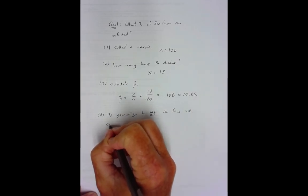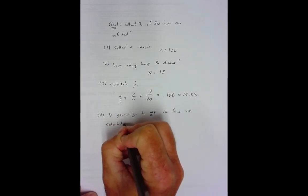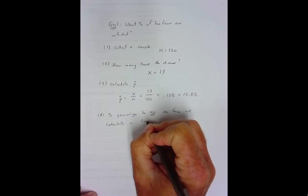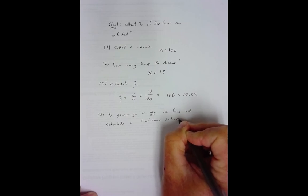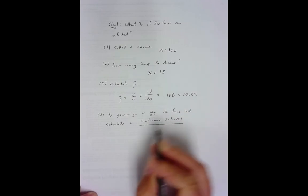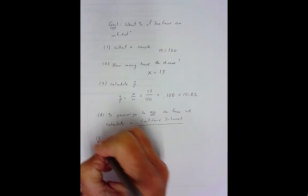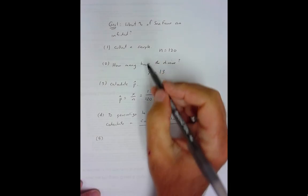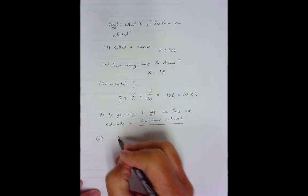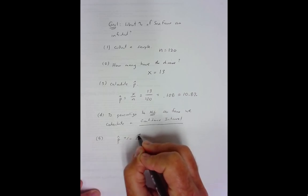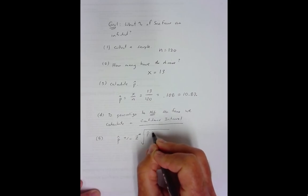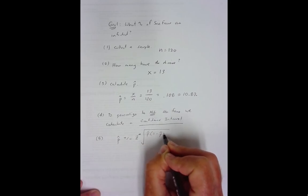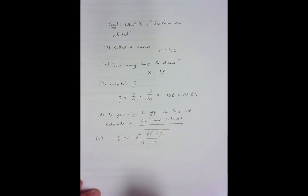To generalize to all sea fans, we calculate a confidence interval. And the confidence interval for this type of problem is p-hat plus or minus z-star square root of p-hat times 1 minus p-hat over N.